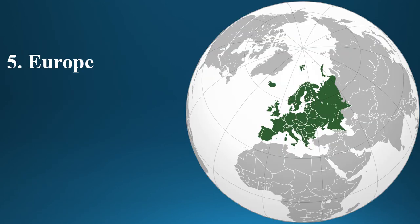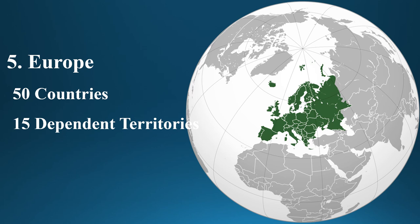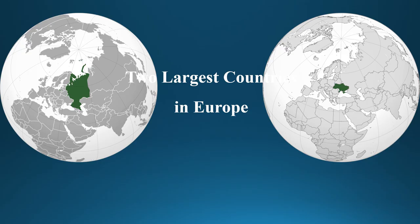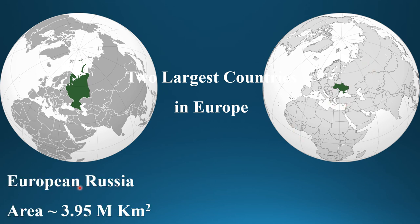Europe is another continent with 50 countries and 50 dependent territories. The total area of Europe is 10.01 million square kilometers. The two largest countries in Europe are European Russia and Ukraine. Since Russia is a transcontinental country, the European part of Russia is considered the first largest country in Europe. European Russia has an area of 3.95 million square kilometers.